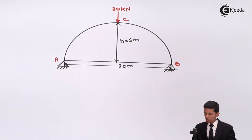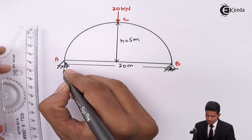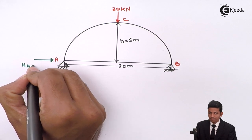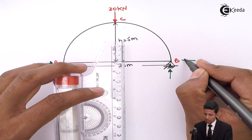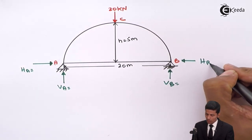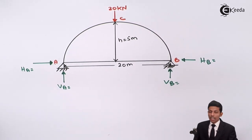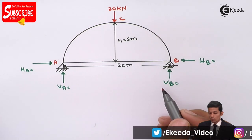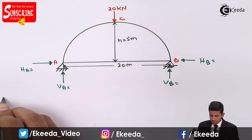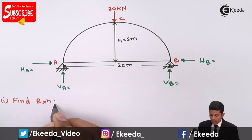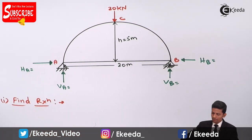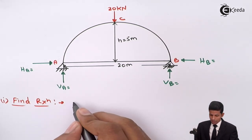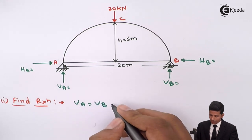Now we have to find VA and VB by applying conditions of equilibrium. Since the 20 kN load is at the center, VA equals VB equals 10 kN. You can write this directly, or solve by taking moment at A equal to zero: 20 into 10 minus VB into 20 equals zero, giving VB equals 10 kN.